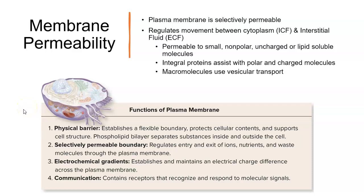To summarize: the plasma membrane is the same thing as the cell membrane. It provides a physical barrier between the intracellular fluid and the extracellular fluid, and it is selectively permeable — some things can pass and some things don't. It is permeable to small, nonpolar, uncharged, or lipid-soluble molecules. Integral proteins assist polar and charged molecules to get across. Big macromolecules are moved in a vesicle made of cell membrane. The cell membrane also helps maintain the electrochemical gradient and communicate with neighboring cells.